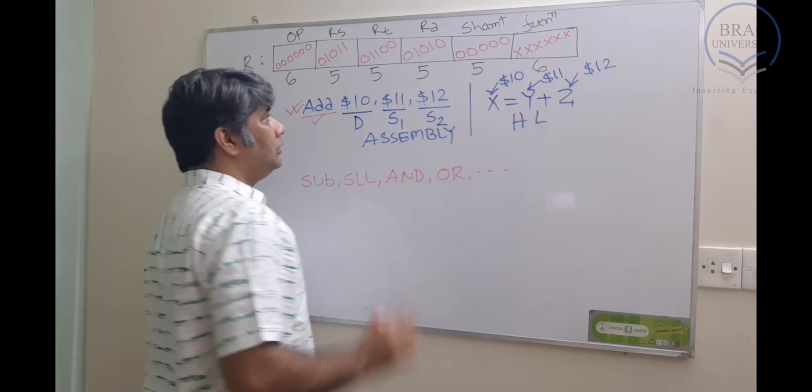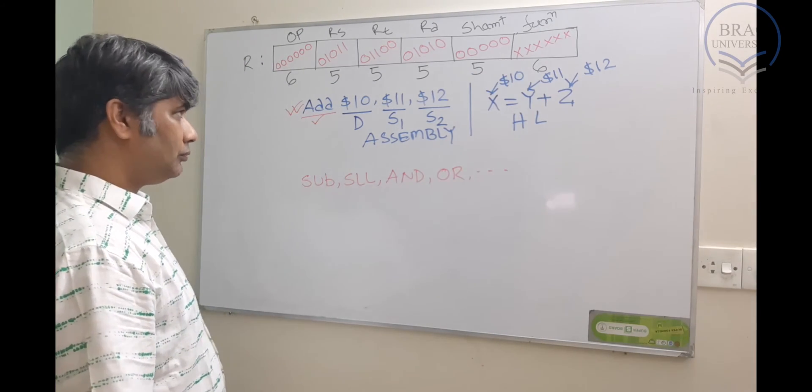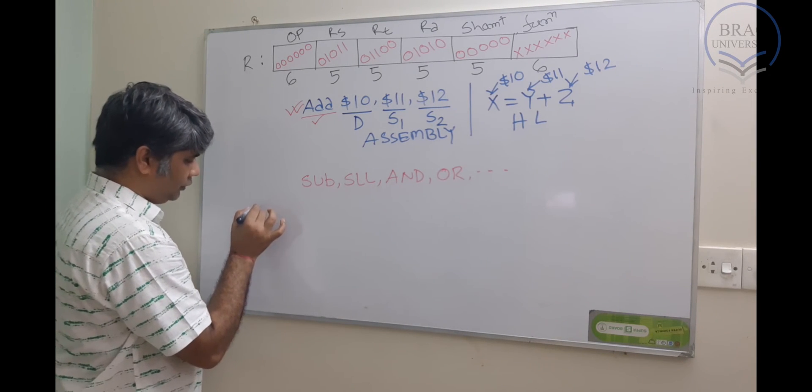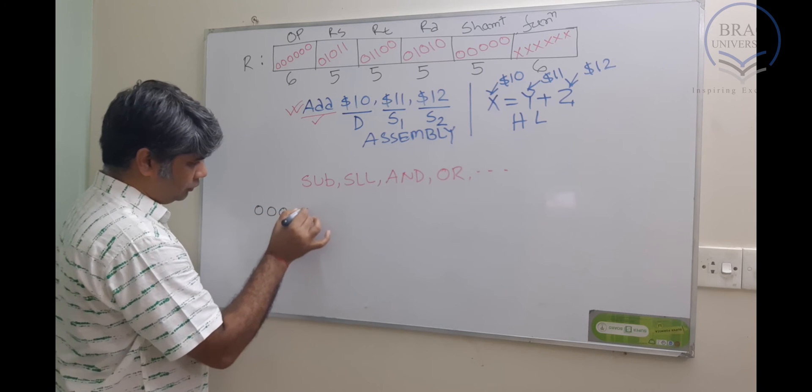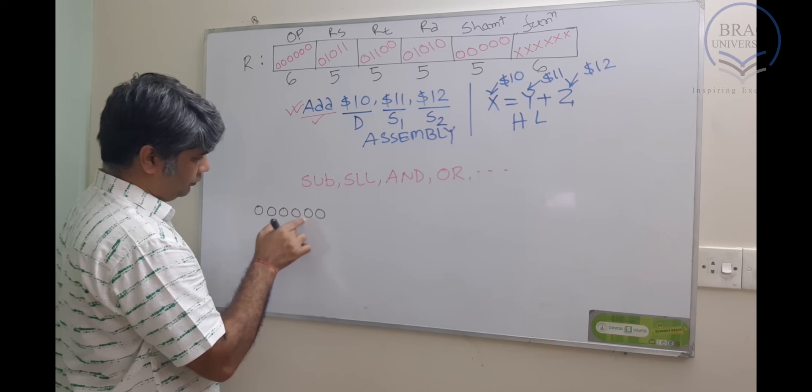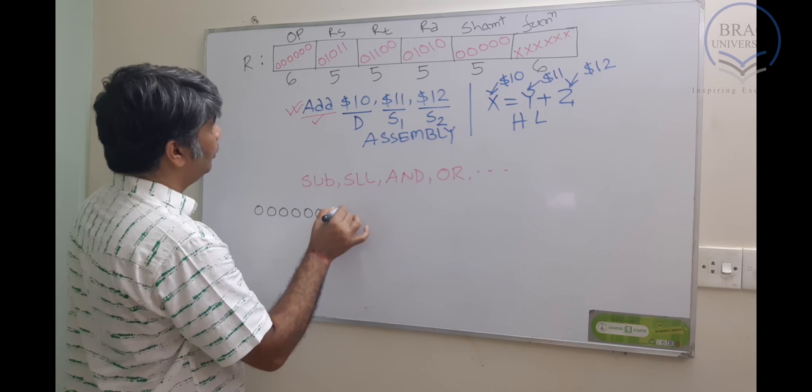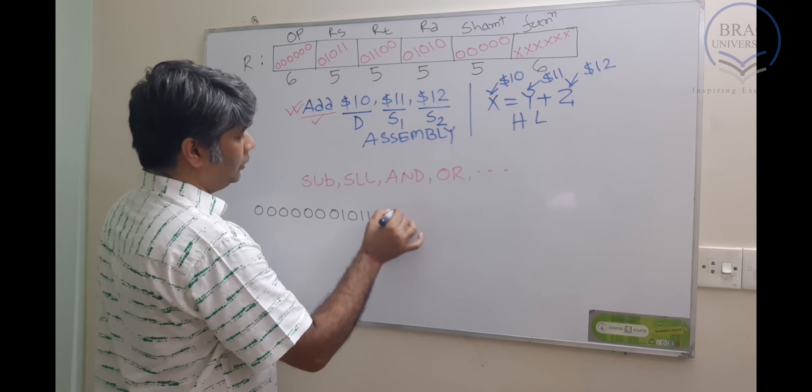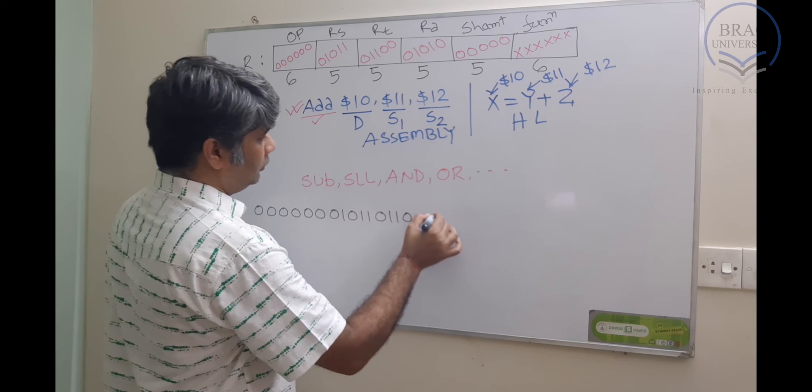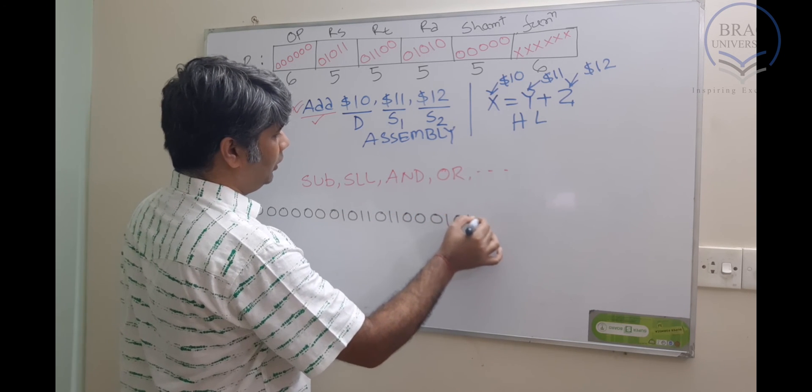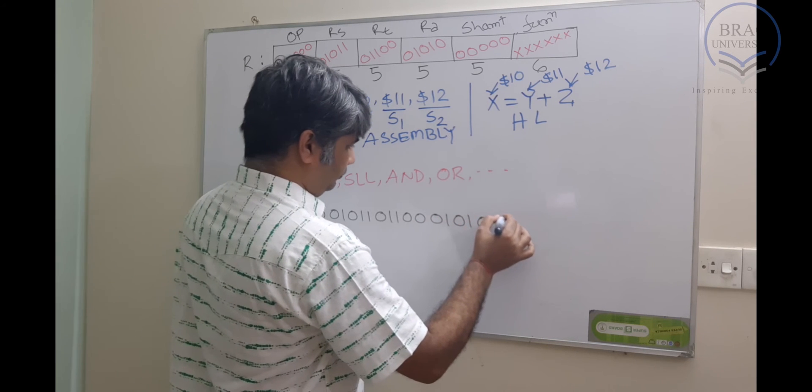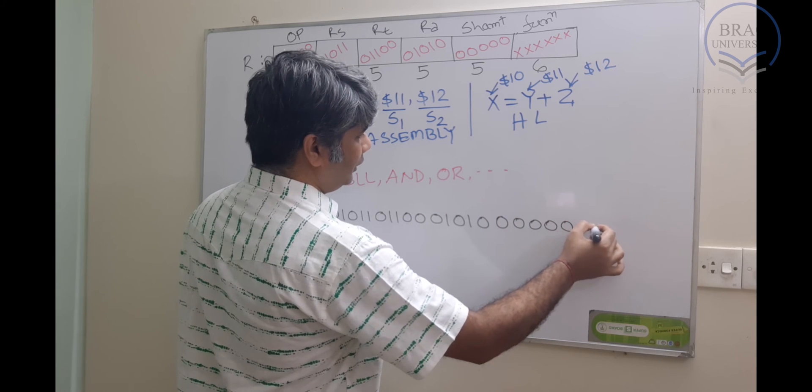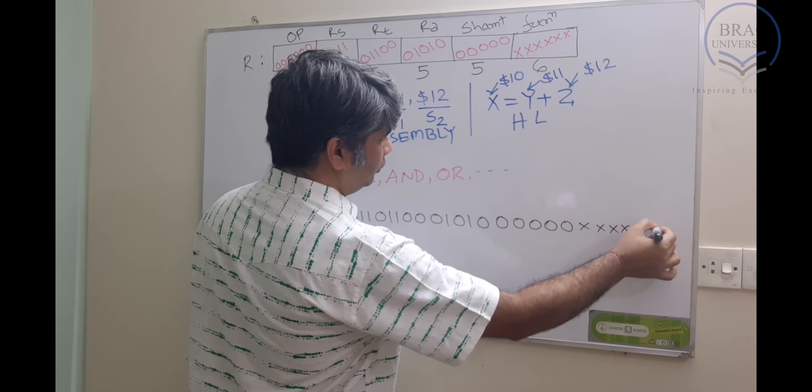So this is what the encoding would look like. If I write it here, we have 000000, 01011, 01100, 01010, 00000, and then we have this undefined or unknown part.